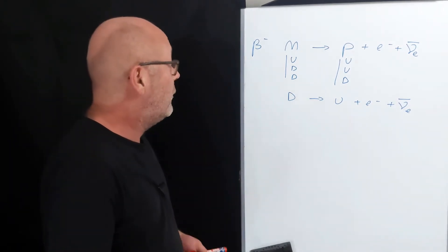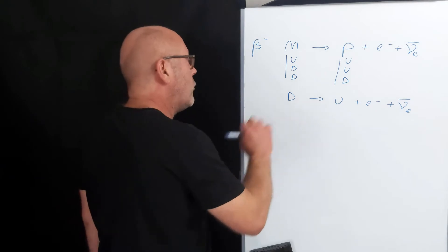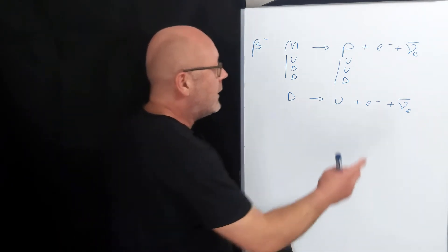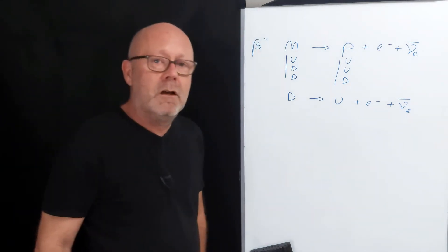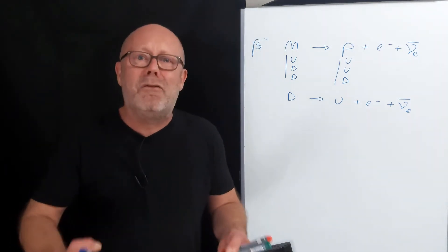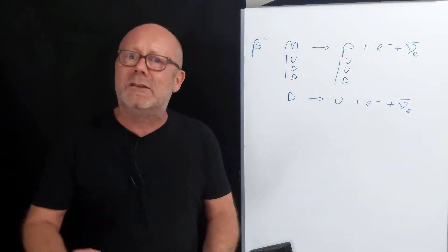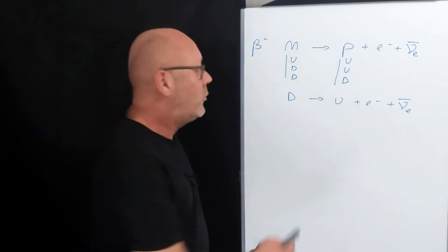So this reaction tells us that we started with a down quark, and we end up with an up quark, an electron, and an anti-neutrino of the electron. But it doesn't give us any information about the processes which are going on and that lead to this transformation.